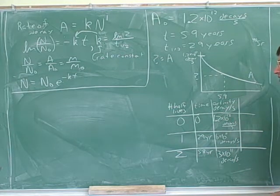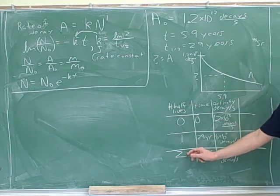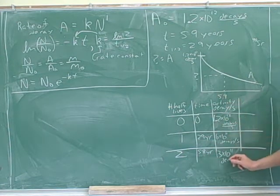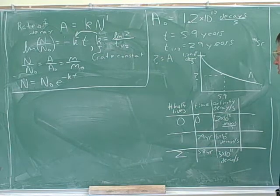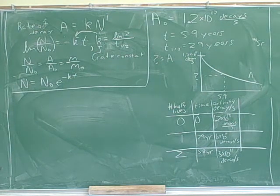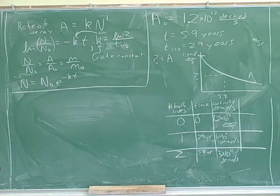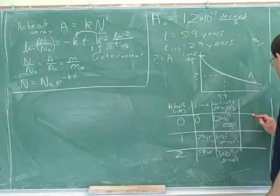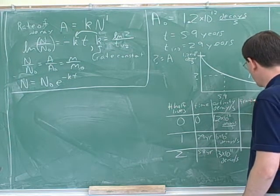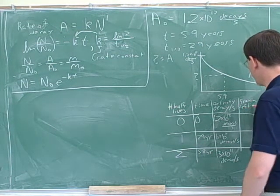Notice that logically you should fill out the number-of-nuclei column first, then the activity column, and then the fraction column. The question was asking for the fraction that have decayed, so let's make another column here for the fraction of the nuclei that are remaining.